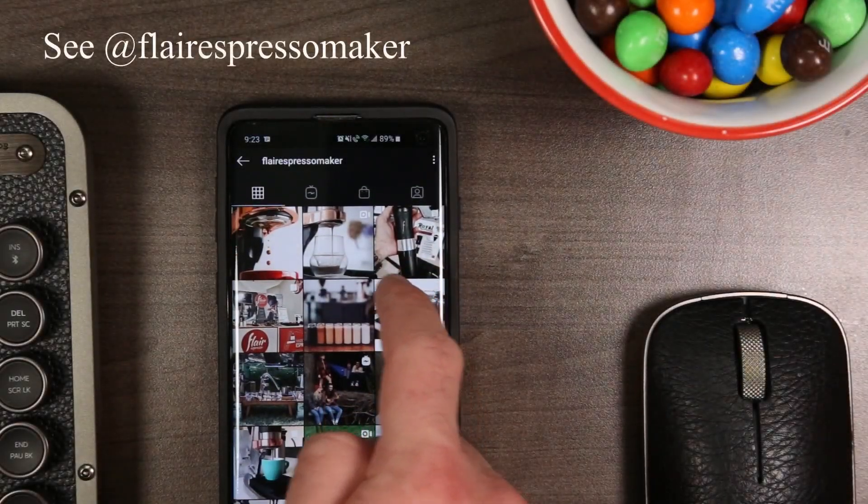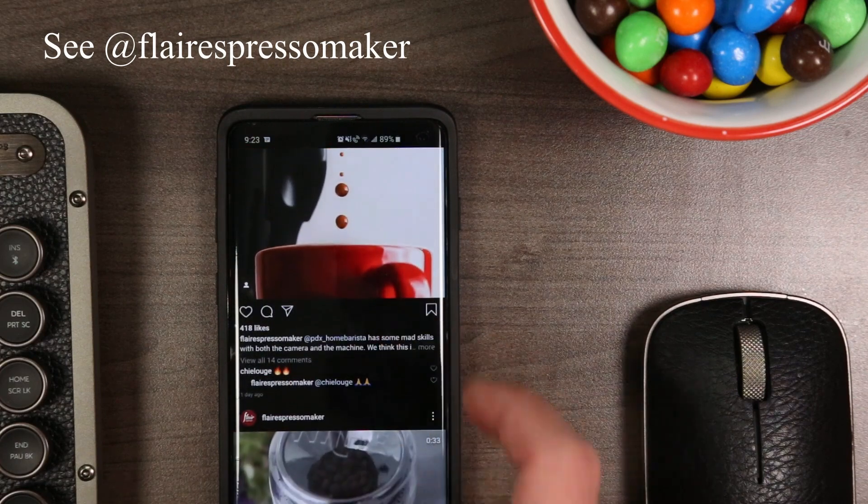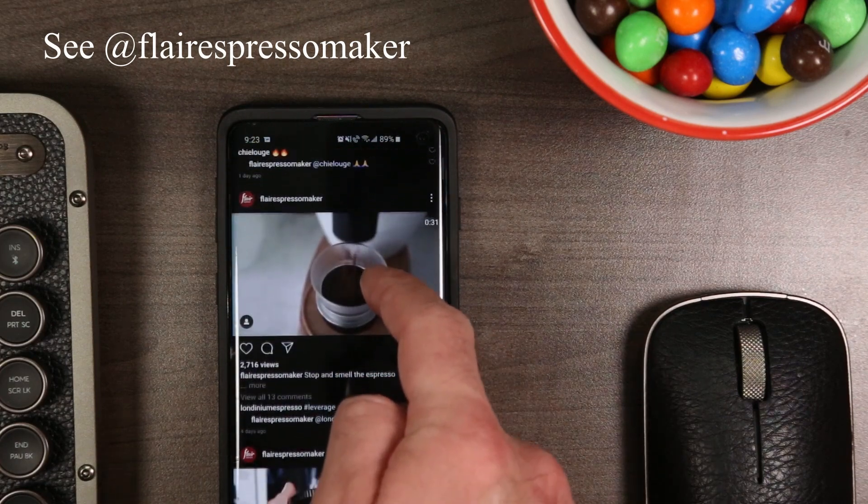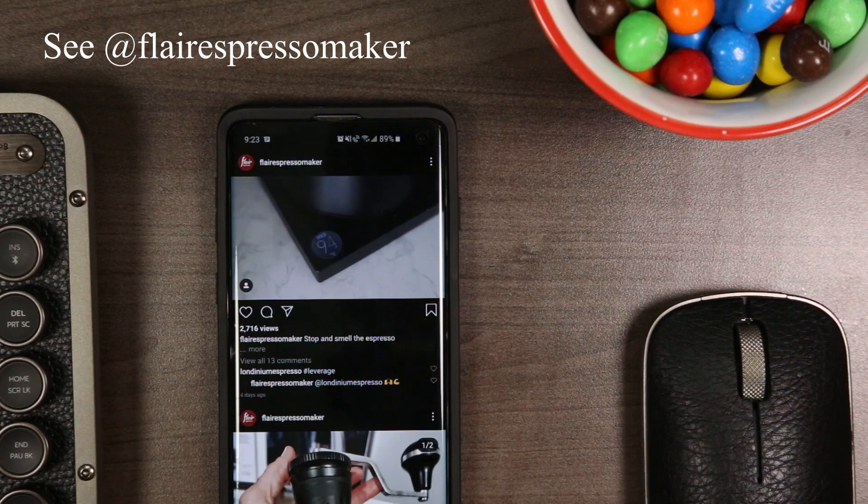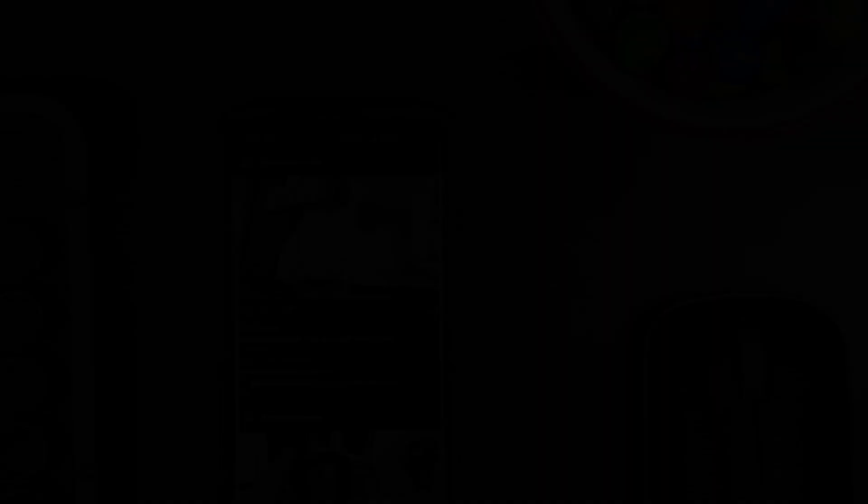So when I stumbled across Flair's manual espresso machine, I was immediately intrigued. This beautifully simple device, relying on little more than boiled water, a lever and a little elbow grease, involves you directly in the espresso brewing process, albeit along with all the inconsistencies that humans bring.